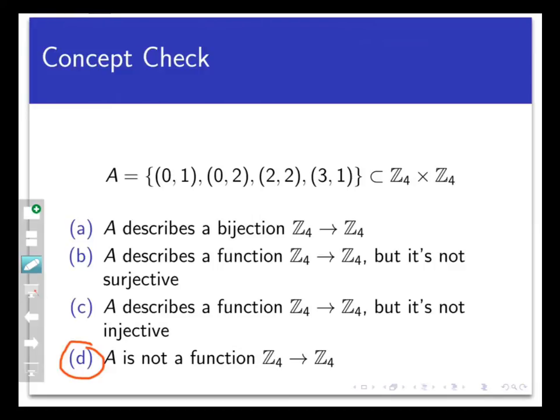First of all, not every point in the domain copy of Z4 maps to something. The number 1, for example, doesn't map to anything here. And you can tell that because you never see a pair that has 1 in the first coordinate.